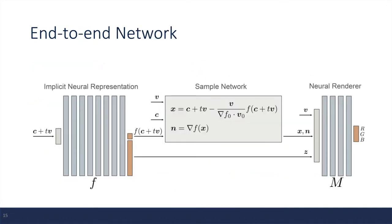So here is the overview of the network, and it has three different components. The first part is the implicit neural representation, which is used to estimate the geometry and the camera parameters.